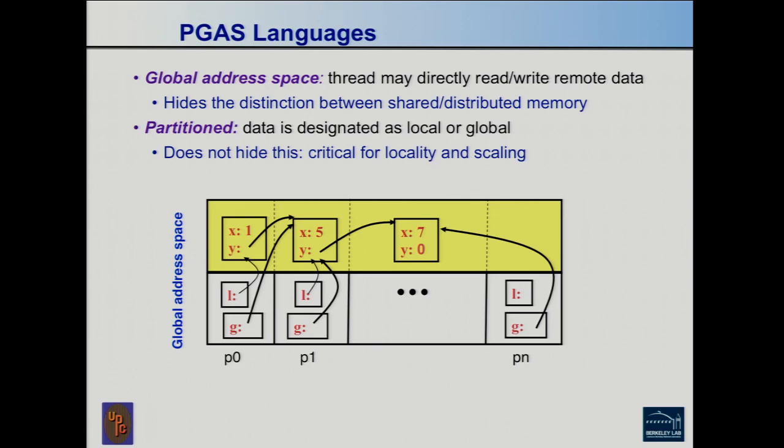In UPC and UPC++, there's also a split between the private part of the address space and the shared part of the address space — all the data structures that are accessible. Not every variable is accessible. You can think of variables in private regions as things like stack variables. If a function returns, that variable is gone, so it's not useful to have other processors pointing to it. If you want something to be accessible to other processors, you put it in the shared part of the space by doing a dynamic memory allocation, or putting it in static scope in C or C++.